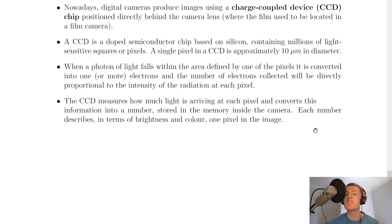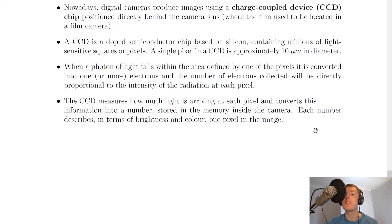So to summarise: CCD chips are used in cameras, and they have pixels. When a photon of light hits a pixel, electrons are produced, and the number of electrons corresponds to a number that tells us how intense and bright the light will be, and therefore its colour.